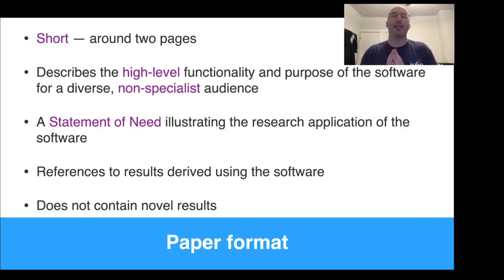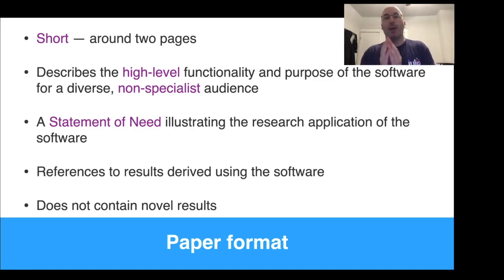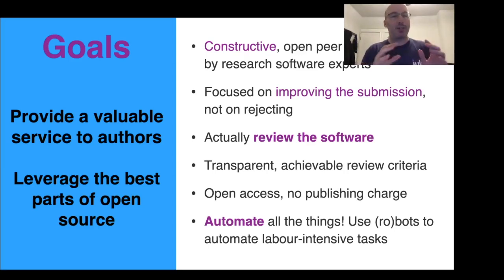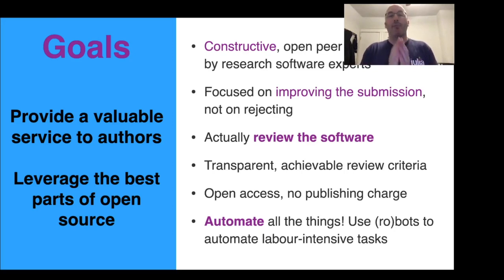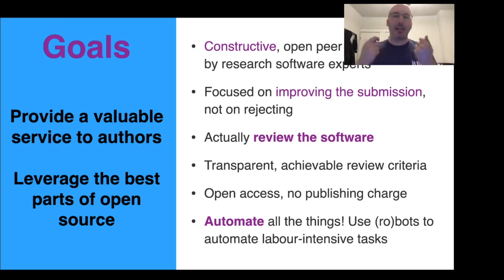It should describe the high-level functionality and the purpose of the software aimed at a diverse non-specialist audience. It has a statement of need that illustrates where the software can be applied in actual research applications, and contains references to results that use the software, but it does not contain actual novel scientific results — it's about the software artifact. The goals are providing a valuable service to authors while leveraging the best parts of open source, done by a constructive, totally open peer review process on GitHub, led by research software experts, focused on improving the submission itself, not on rejecting the paper.